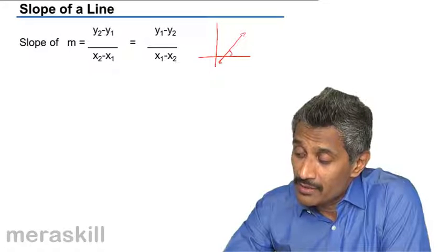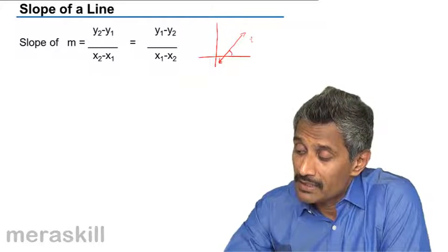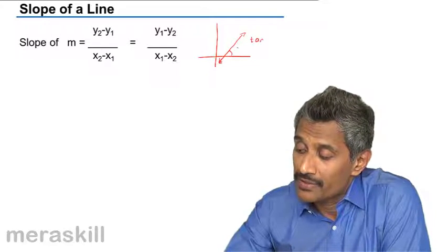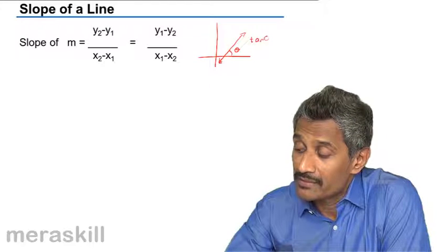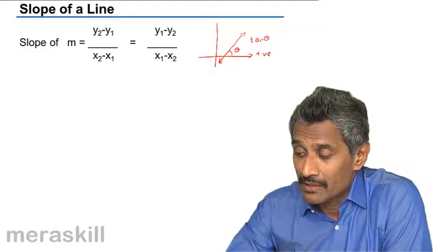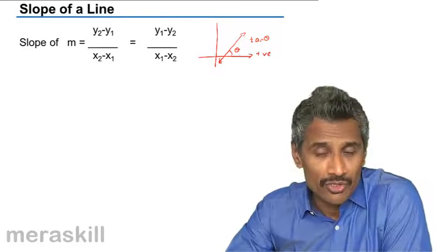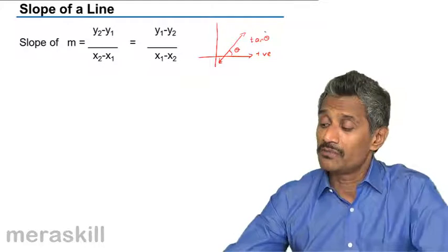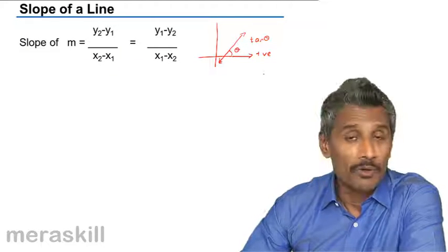The slope of the line means tan of the angle that the line makes to the positive x-axis. Tan theta, tangent theta, which is a trigonometric ratio you're all familiar with, is the slope of that line.